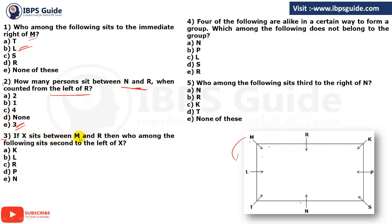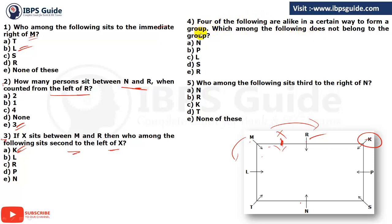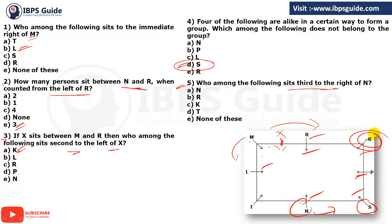If X sits between M and R, who among the following sits second to the left of X? X will come somewhere between M and R, and second to the left of X — since everyone is facing inside, going left gives R and then K. That is option number A. Fourth: four of the following are alike in a certain way to form a group — which does not belong? N, P, L, and R are at the middle positions, while S is at the corner — so the answer is option number D. Fifth: who sits third to the right of N? N is here — 1, 2, 3 to the right — that will be K, option number C.